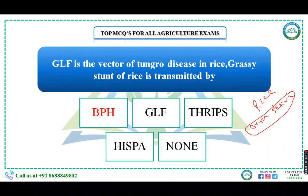The chromosome number of rice is 24. The inflorescence of rice is known as a panicle and the fruit type is caryopsis. Regarding climate conditions, rice needs hot and humid climate. The origin of rice is the Indo-Burma region, and it originated around 2200 BC.